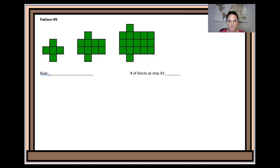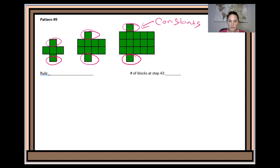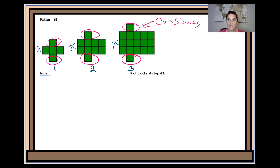Let's look at the next pattern. Here I notice that there are two blocks on the ends of each rectangle — those are actually constants. I'll label my positions 1, 2, and 3. If I look at the height, it matches my position number: one block, two blocks, three blocks — so the height is x. Looking at the other dimension across the rectangle, I see 3 blocks. I'll check whether position number plus 2 works for all positions — and yes, it does work.